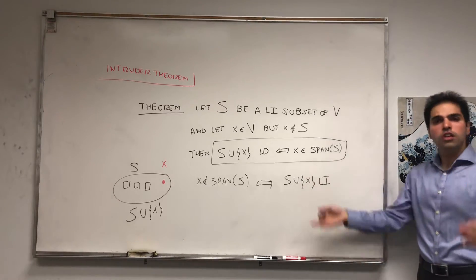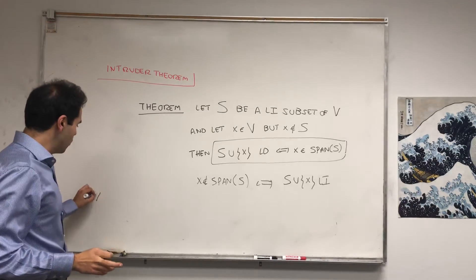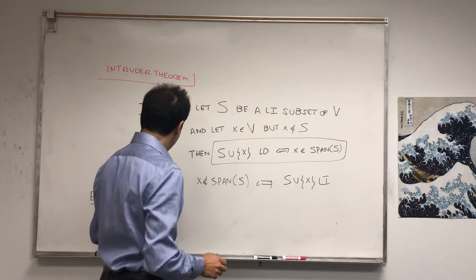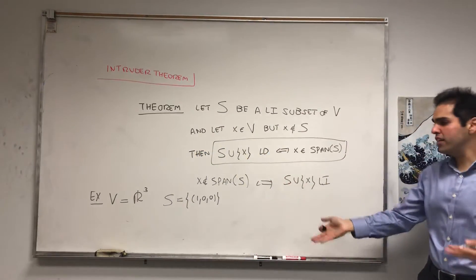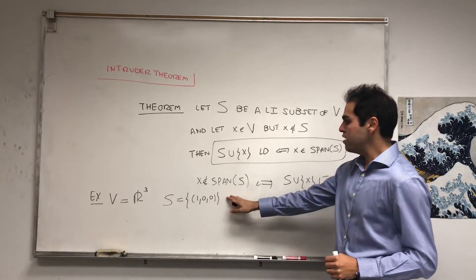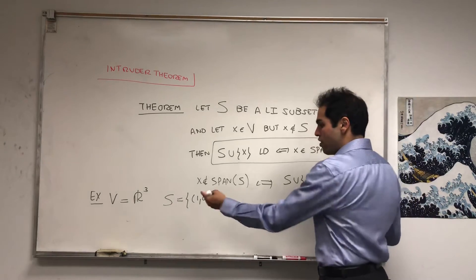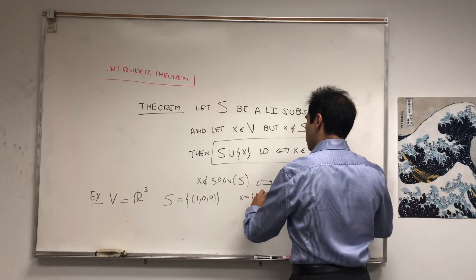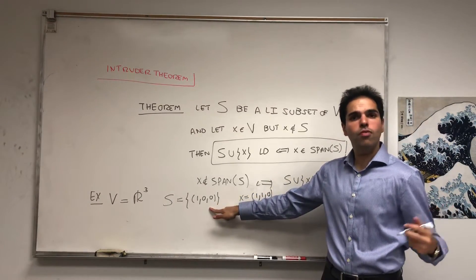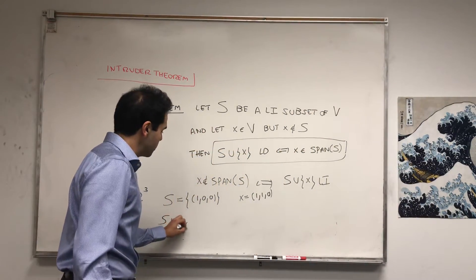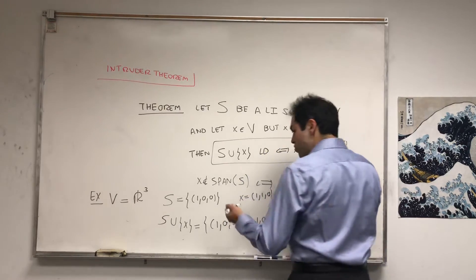This is actually very useful to construct bases of vector spaces. As an example, let V be R3 and suppose you start with S being {(1,0,0)}. To extend it to a basis of R3, if you pick any vector not in the span of S, the new set becomes linearly independent. For example, let X be (0,1,0). Since X is not in the span of S — it's not a multiple of (1,0,0) — the new set S union X is linearly independent.